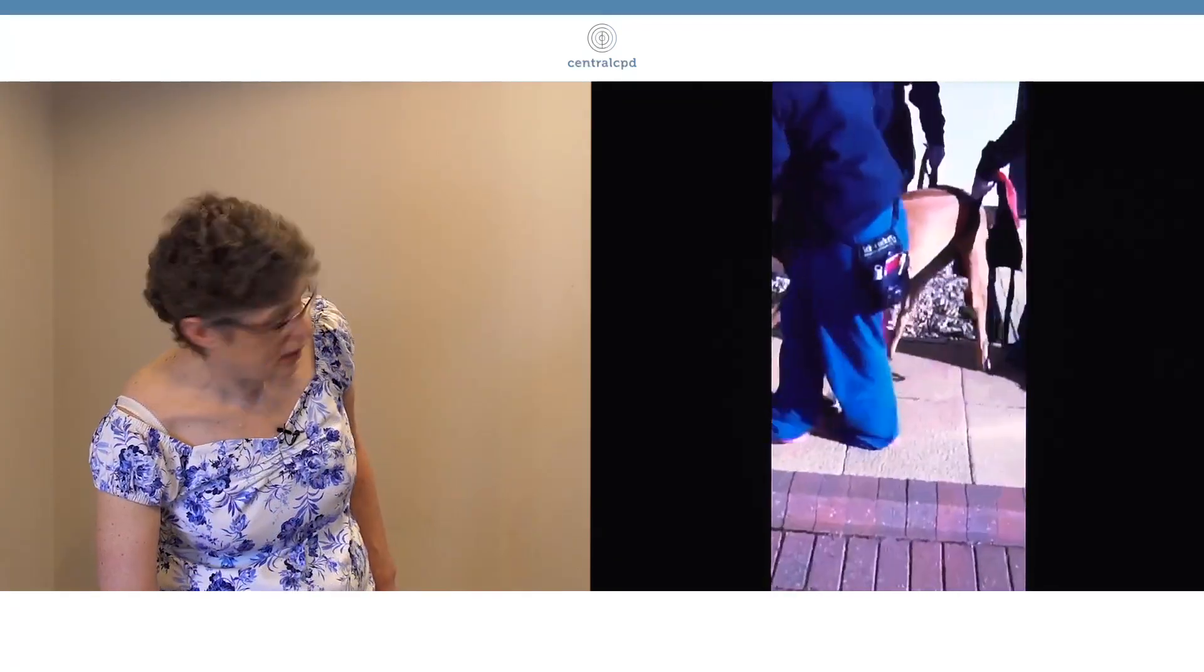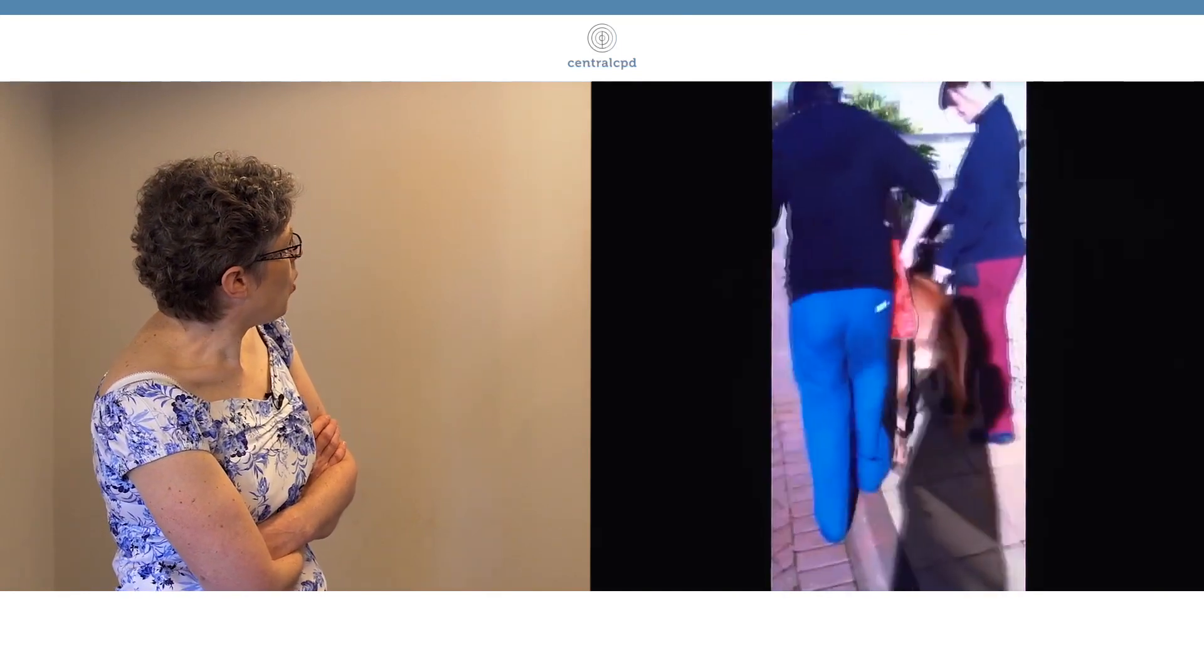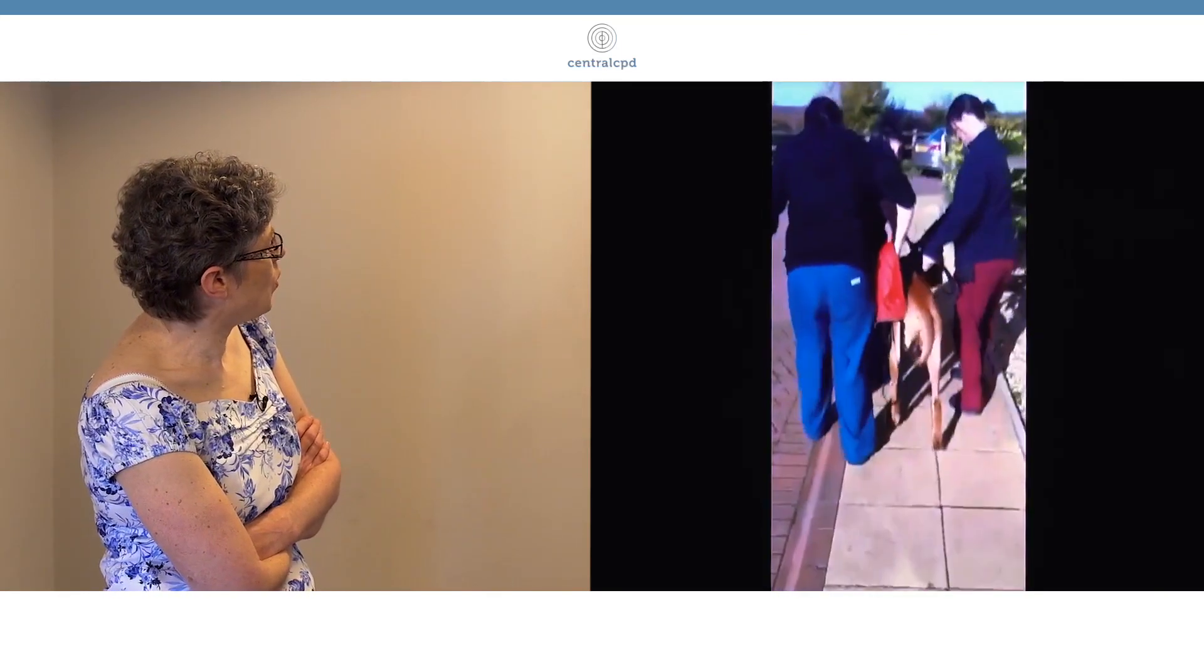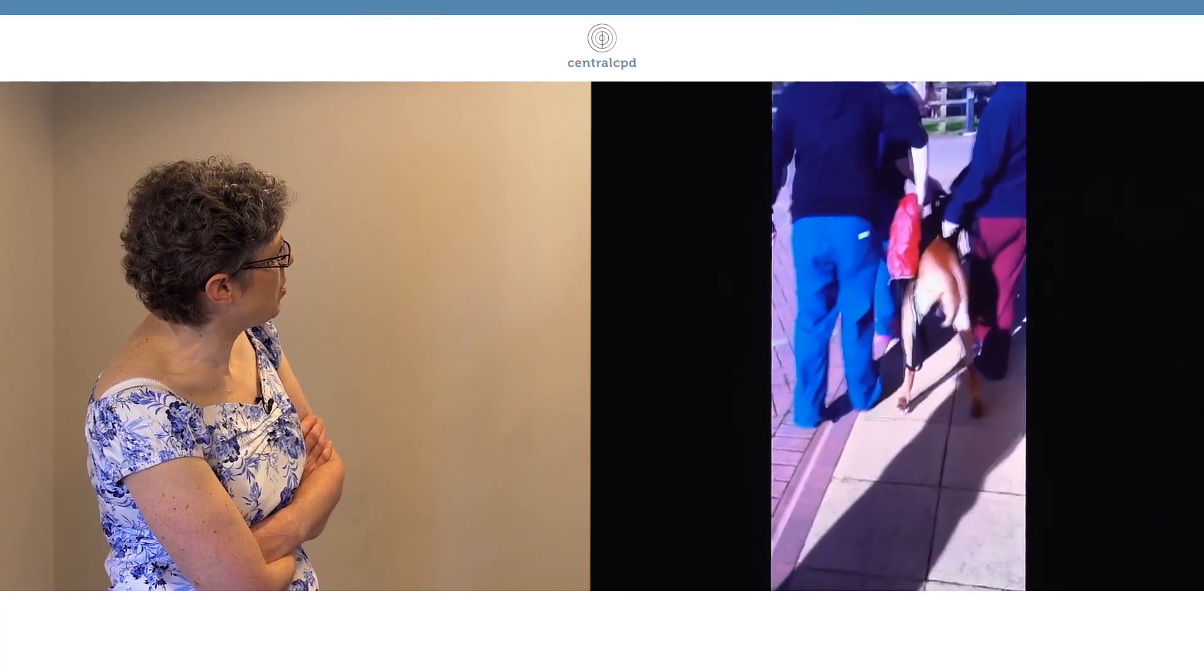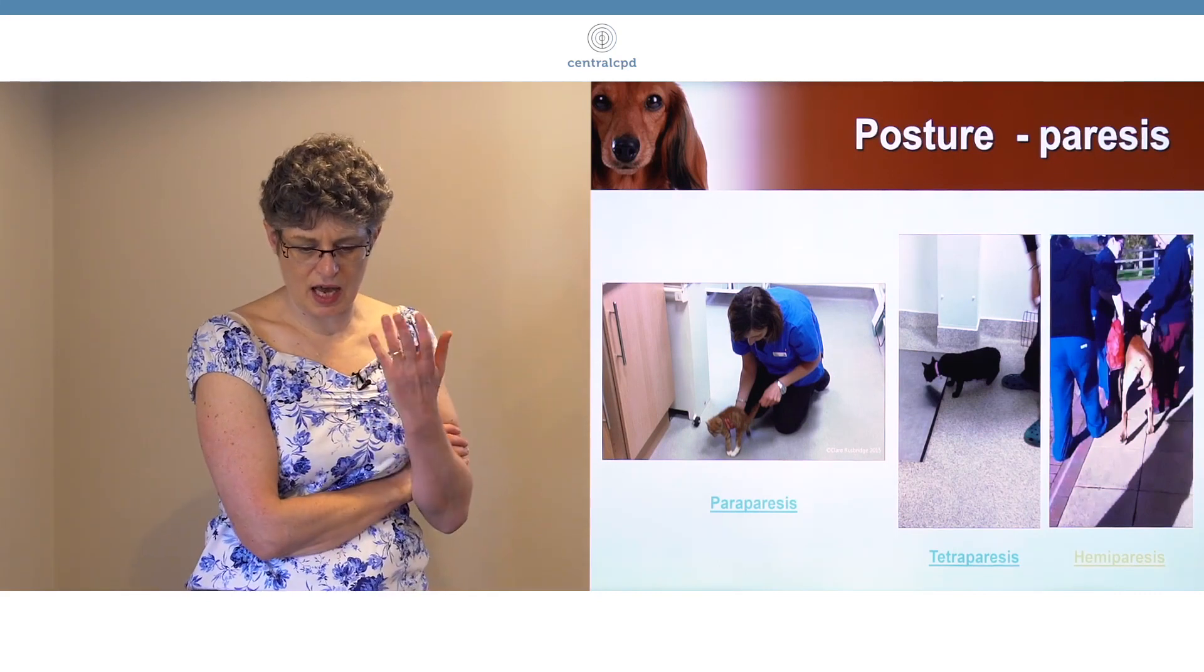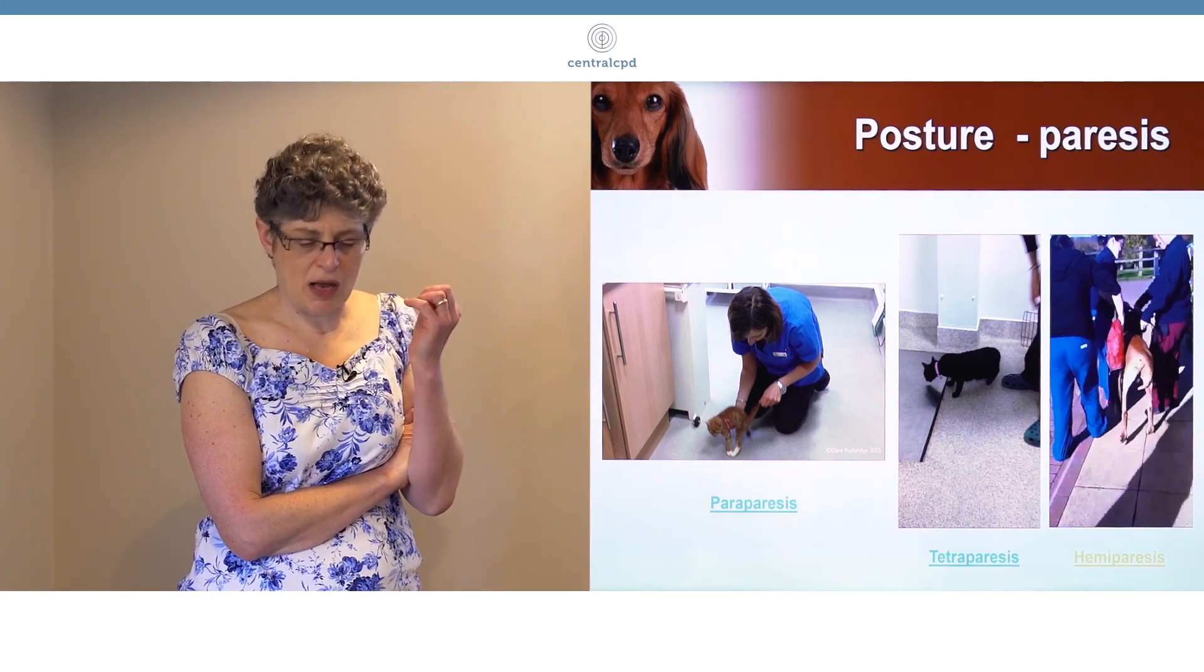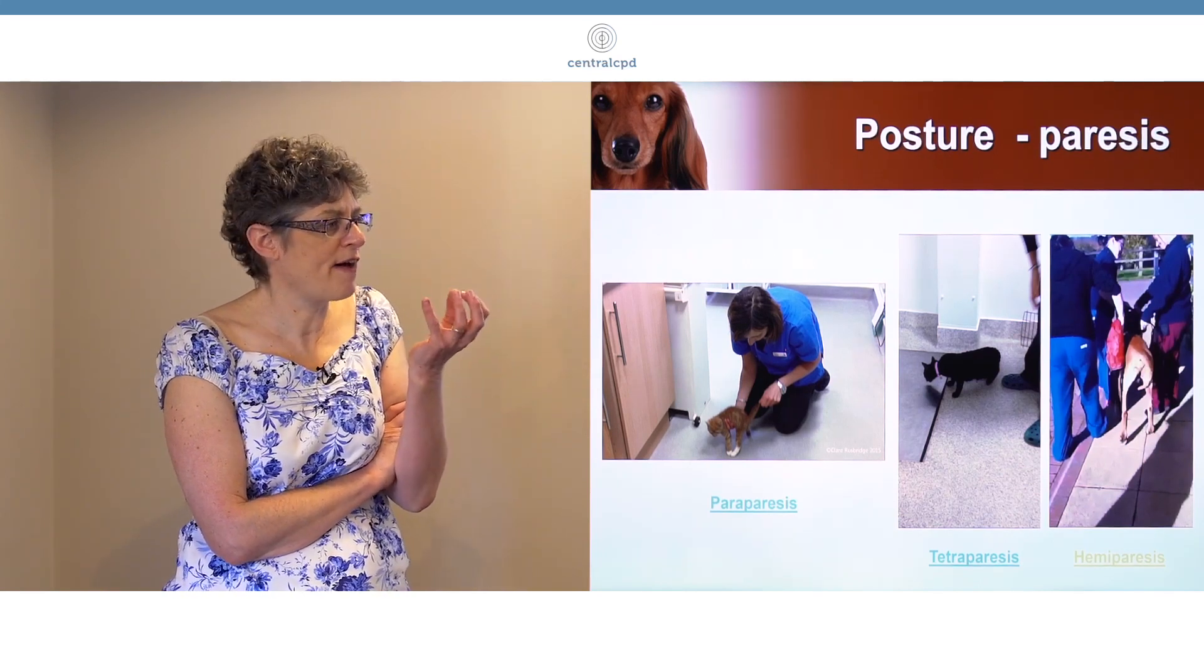Then we have hemiparesis. One hallmark of spinal cord disease is that it's often asymmetrical. You can see this dog is very tetraparetic, but one side is worse than the other. In contrast, neuromuscular disease is often very symmetrical.